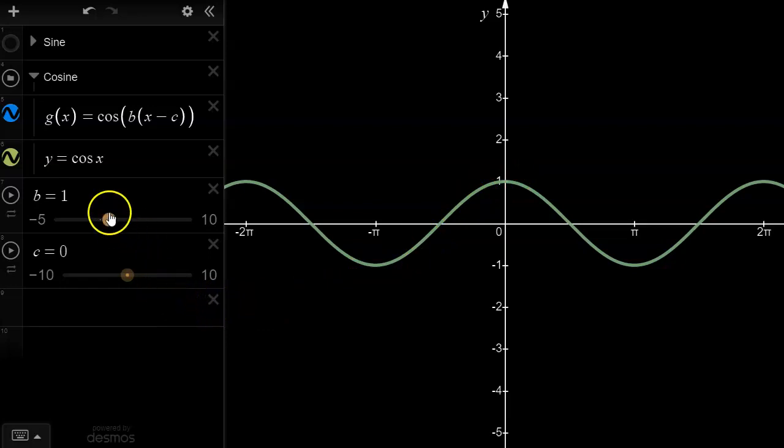Again, adjusting the b value affects the or leads to a horizontal transformation where 1 over b corresponds to the horizontal stretch factor. And again, b itself corresponds to the number of cycles that can fit on the interval between 0 and 2 pi.